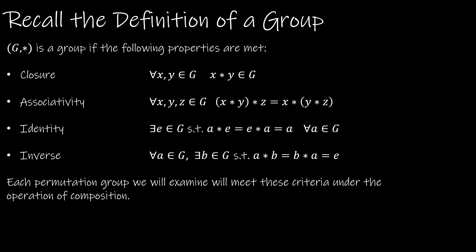It's important to recall that because we're talking about a permutation group, the group will in fact meet all of the criteria from the definition of a group. A group has closure, which means if I compose two elements of the set, the result will still be in the set. Associativity means I can group them differently and still get the same result.